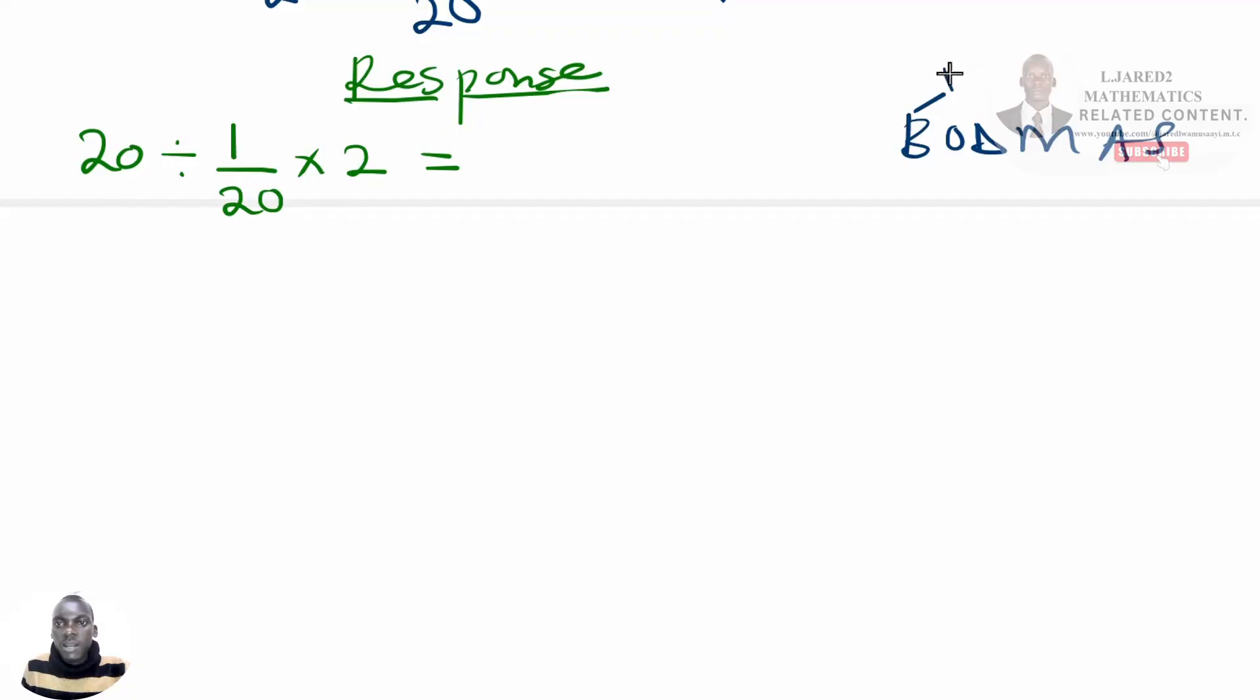Whereby B stands for brackets, O stands for off, D stands for division, M stands for multiplication, A stands for addition, and then S for subtraction. So we are going to follow BODMAS to get the right answer to this expression or to this math trick.